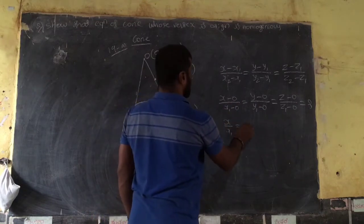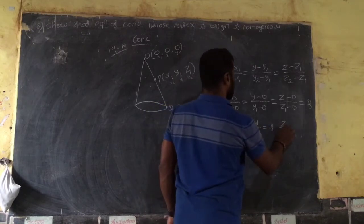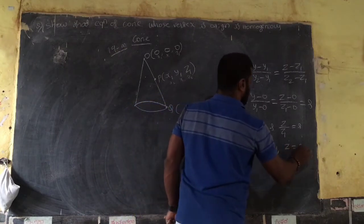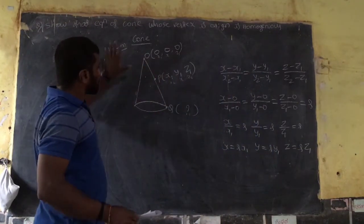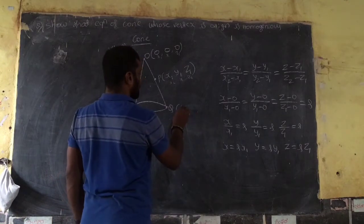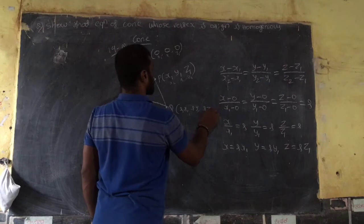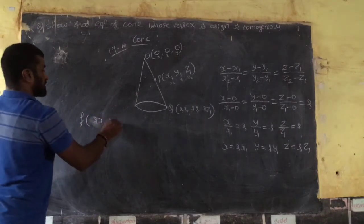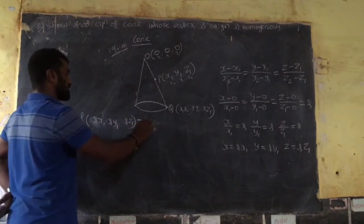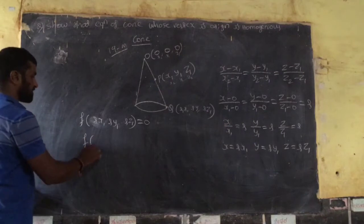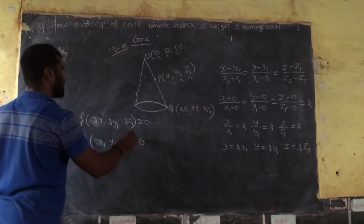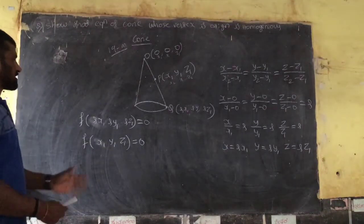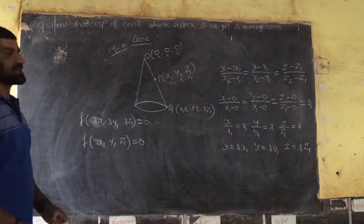Equating each ratio: x/x₁ = r, y/y₁ = r, z/z₁ = r. Therefore x = rx₁, y = ry₁, z = rz₁. So the point Q = (rx₁, ry₁, rz₁) lies on the surface, giving f(rx₁, ry₁, rz₁) = 0. Since x₁, y₁, z₁ are arbitrary and r is a scalar, this is a homogeneous equation. Hence the proof is complete.